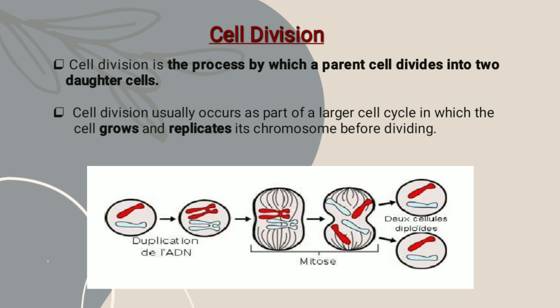Cell division usually occurs as a part of a larger cell cycle in which the cell grows and replicates its chromosomes before dividing.